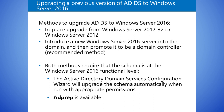To upgrade the operating system of a Windows Server 2012 R2 domain controller to Windows Server, perform the following steps. 1. Insert the installation media for Windows Server, and then run Setup. 2. On the Choose What to Keep page, select Keep Personal Files and Apps, and then click Next. 3. On the What Needs Your Attention page, read the notice that Windows Server upgrades are not recommended. Click Confirm, and then click Refresh. 4. On the Ready to Install page, click Install. The server will restart several times while the upgrade is in progress.